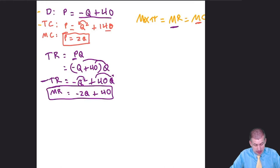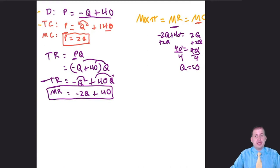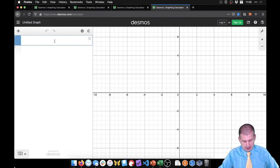Now we can do the math to find the ideal price and quantity. Setting marginal cost (2Q) equal to marginal revenue (negative 2Q plus 40) and solving: adding 2Q to both sides gives 40 equals 4Q, so the best quantity is Q equals 10. We can also plug these directly into Desmos — marginal cost is Y equals 2X, and marginal revenue is Y equals negative 2X plus 40.